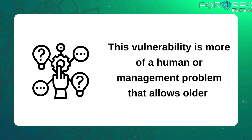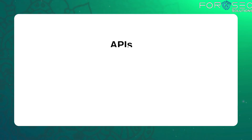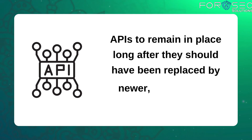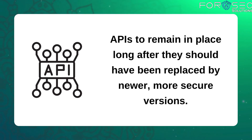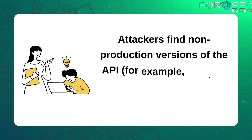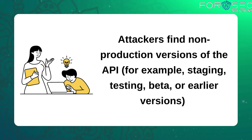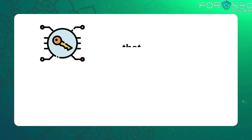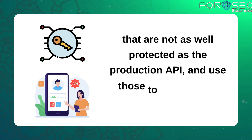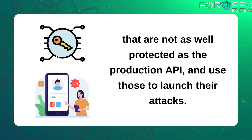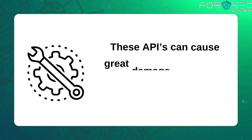Improper assets management allows older APIs to remain in place long after they should have been replaced by newer or more secure versions. Attackers find non-production versions of APIs — for example, staging, testing, beta, or earlier versions — that are not as well protected as the production API, and use those to launch their attacks.